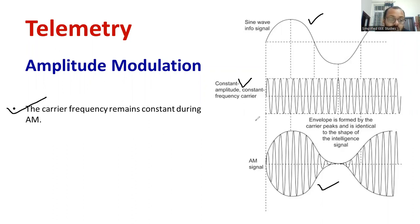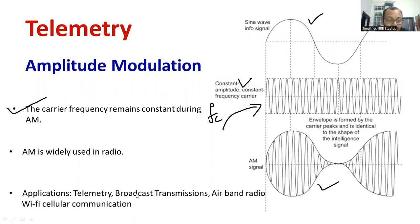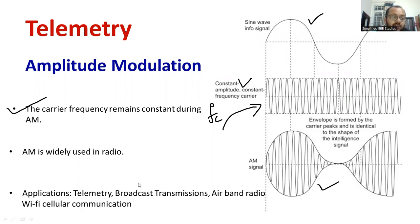The carrier frequency remains constant during amplitude modulation — you can see that fc, the frequency of the carrier signal, remains the same. Amplitude modulation is widely used in radio station broadcasting and other applications such as telemetry — which is our application since our subject is sensors and transducers — as well as air band radio systems and Wi-Fi cellular communication.